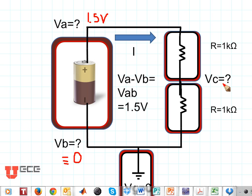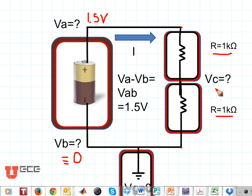Now what about VC? We can see that these two resistors are equal, which means the voltage is going to be evenly split between them. The voltage between this midpoint and the bottom, which is 0, is 1.5 volts. So VC is going to be halfway between 1.5 volts and 0, or 0.75 volts.